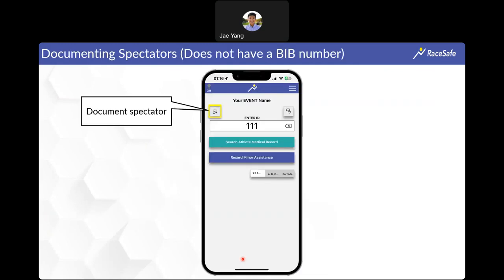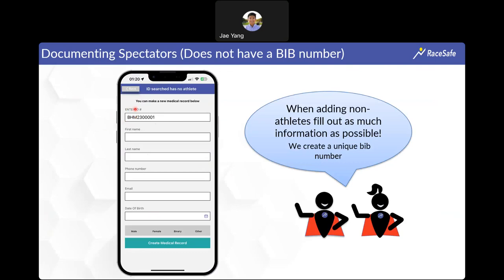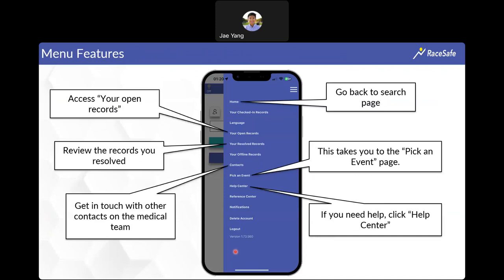If you're documenting non-athletes like spectators or family members, click the plus icon at the top left corner without entering a bib number, then click 'document spectator.' The system will auto-generate a unique ID for that person. Add as much demographic information as possible — at minimum a first name, and a phone number if you have it. Then click 'create medical record' to document care for that non-athlete.